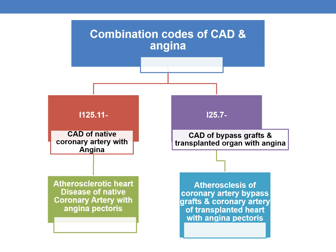There are two subcategories for combination codes of CAD and angina. The first is I25.11 — CAD of native coronary artery with angina pectoris. The second is I25.7 series — atherosclerosis of coronary artery bypass grafts and coronary artery of transplanted heart with angina pectoris.